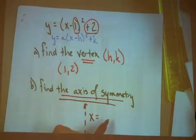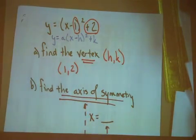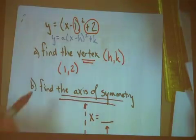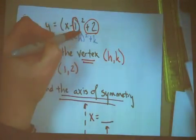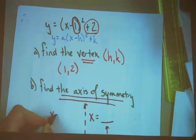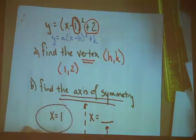In this case, the x will equal the value of the h from the vertex point (h,k). Since our h value is 1, the equation for our axis of symmetry is x equals 1.